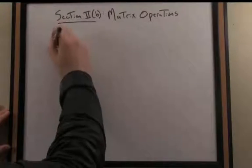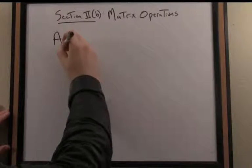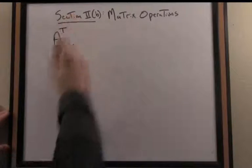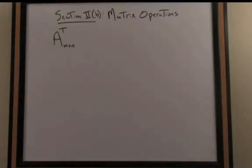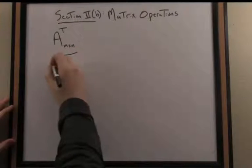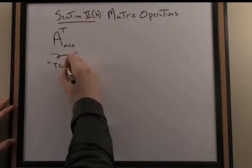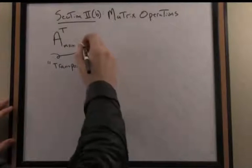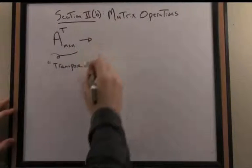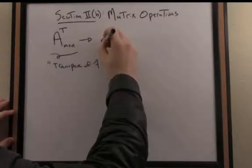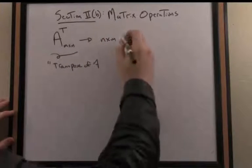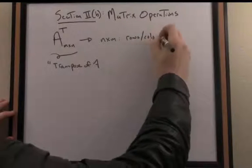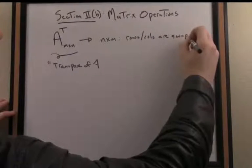The notation is as follows: suppose we have a matrix A that's M by N and we want to take the transpose of it. We use a superscript T, read as transpose of A, and it produces a new matrix which is now N by M, where the rows and columns are swapped.